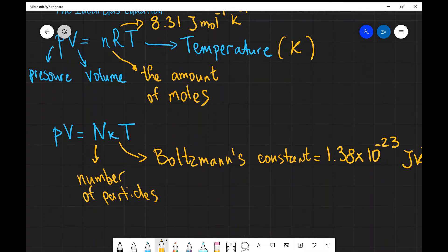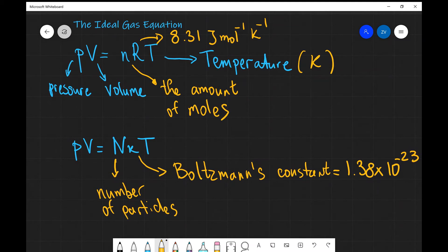So these are the two equations we're going to be using. If we are given the amount of moles, we use the first one. If we're given the number of particles, we use this equation.